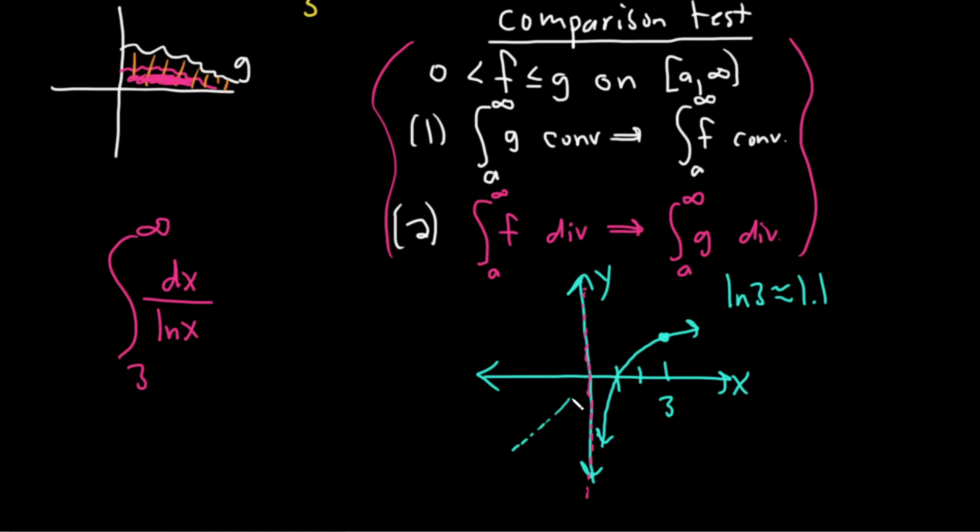But if you think about y equals x, well, that's going to be 3. So certainly ln x is smaller than x for x greater than or equal to 3.